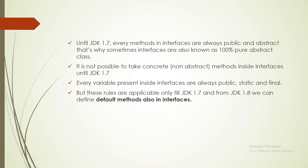All the variables in interfaces are by default public, static, and final in case of interfaces, even if we are not writing explicitly. Implicitly all the variables are public, static, and final only — in other words, they are constants. But this is only till JDK 1.7.